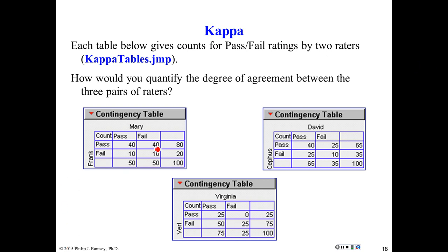To give you an example, I'm on slide 18, and we're looking at some contingency tables. There are three of them, and this is where two raters, for instance Frank and Mary, each rate 100 objects, and we look at how often they agree. Notice they both passed 40 parts and they both failed 10. So they're in agreement 50% of the time. You might think that's pretty good, but we have to be careful because that may well have been chance agreement. Do they really have any inherent ability to agree, or is this just random agreement?